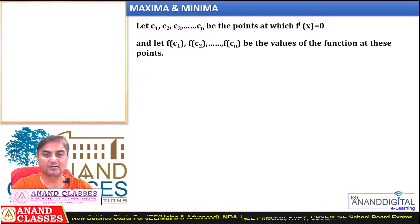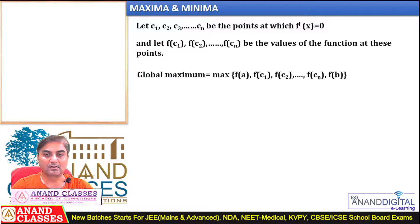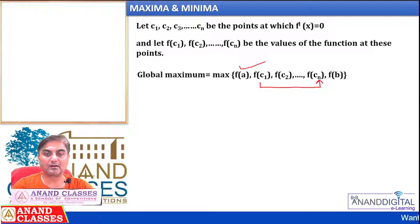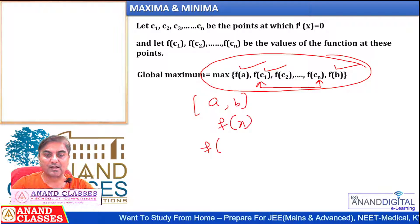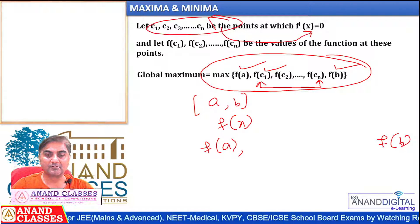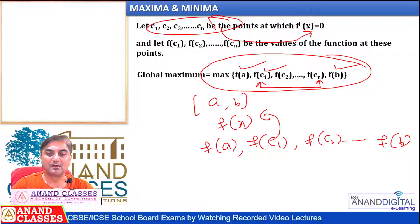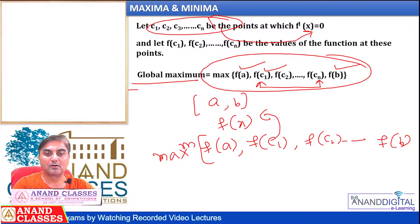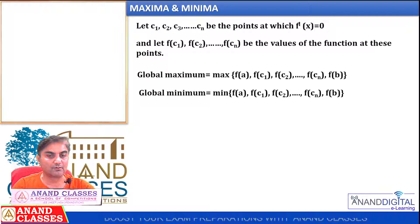Let the critical points be c1, c2, c3, ..., cn — the endpoints where f'(x) = 0. Evaluate f(c1), f(c2), ..., f(cn) at these critical points. Also evaluate f(a) and f(b) at the endpoints of the interval [a, b]. The global maximum is the largest among f(a), f(c1), f(c2), ..., f(cn), f(b). Similarly, the global minimum is the smallest among these values.